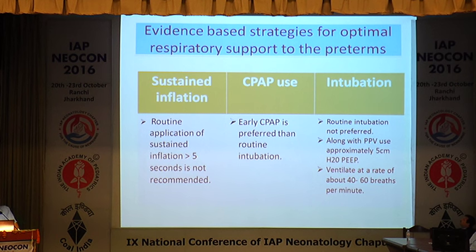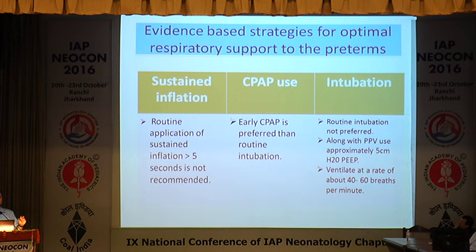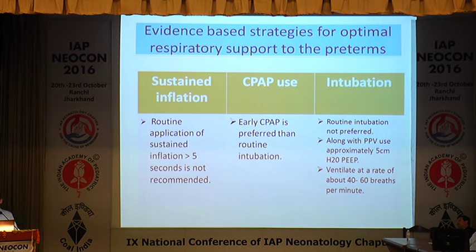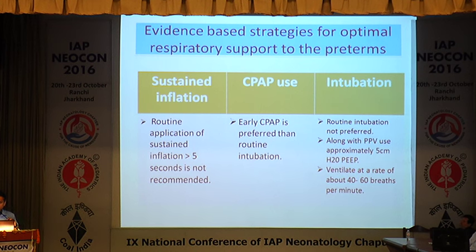Optimal respiratory support to the preterm can be provided with a sustained inflation with the aim to give a long inspiratory time to the baby. However, a sustained inflation of more than a couple of seconds has been shown to have more complications and is not recommended. Early CPAP use is preferred over routine intubation — it was previously thought that for an 800-gram baby, just intubate and give surfactant, then put the baby on the ventilator. Routine intubation is not preferred. Use PEEP all the time if we are ventilating, because PEEP again optimizes functional residual capacity and helps preserve surfactant. Ventilate at a rate of about 40 to 60 breaths per minute.